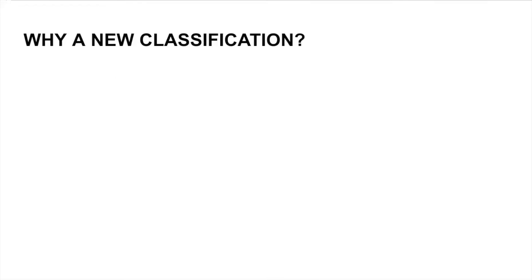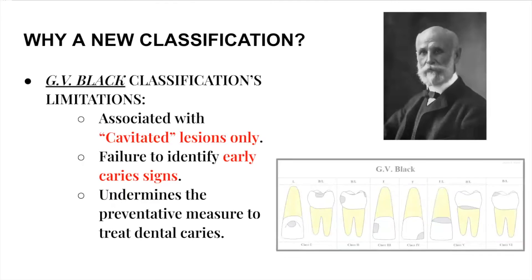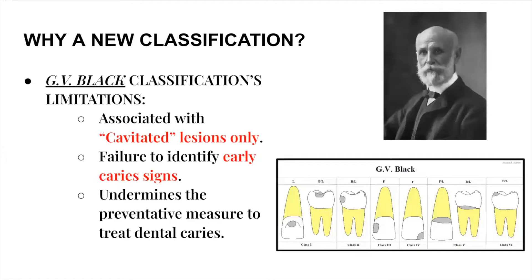Let's talk about why there is a need for a new classification. We know G.V. Black's classification — class 1 to 6 — and it has its own limitations. It's associated with cavitated lesions only, with failure to identify early caries lesions. It can only identify caries once it's been cavitated. And then there's the undermining of preventative measures — in order to treat G.V. Black's classification, we have to have a definitive treatment like a restorative measure, rather than a preventative measure such as sealants.